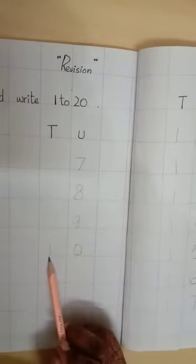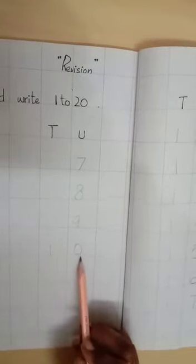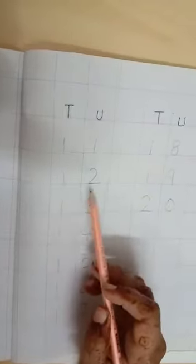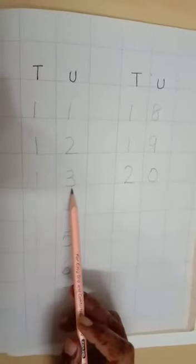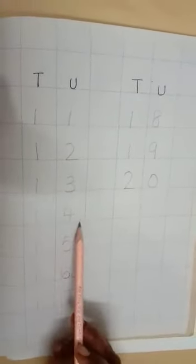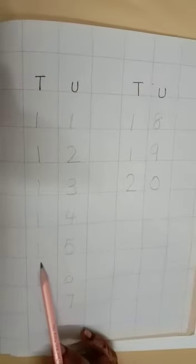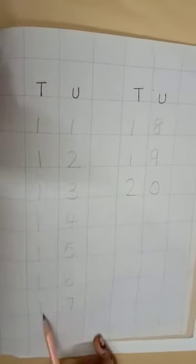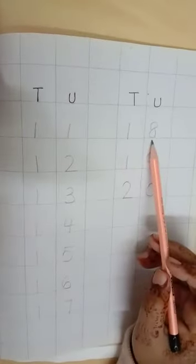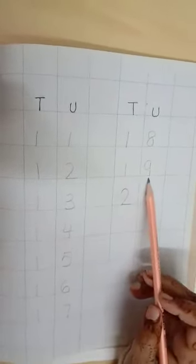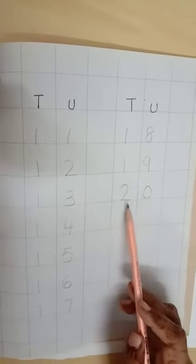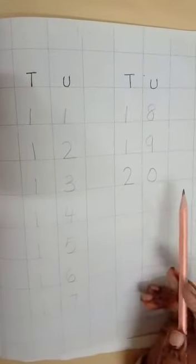In tens our train has started. 1's friendship: 1, 0, 10. 1, 1, 11. 1, 2, 12. 1, 3, 13. 1, 4, 14. 1, 5, 15. 1, 6, 16. 1, 7, 17. 1, 8, 18. 1, 9, 19. 2, 0, 20.